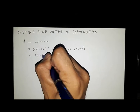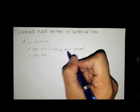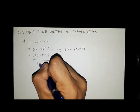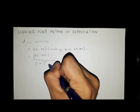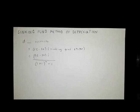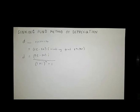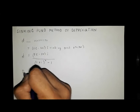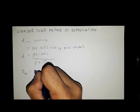Expanding the equation, D equals FC minus SV multiplied by I over (1 plus I) raised to N minus 1. That is your annual depreciation D.